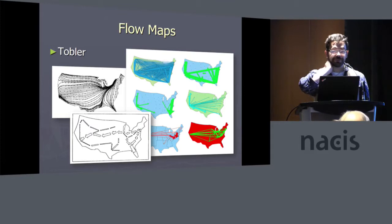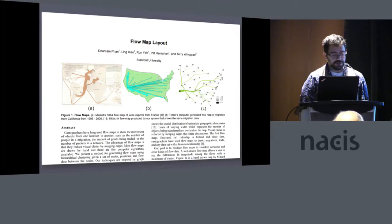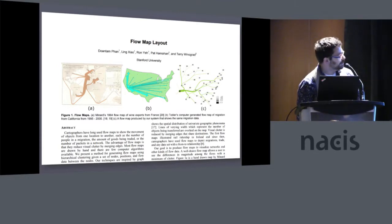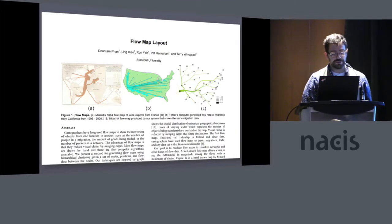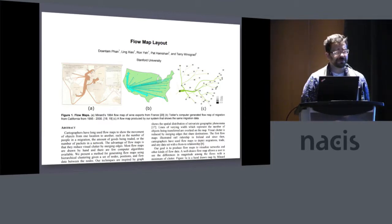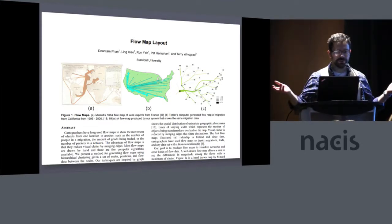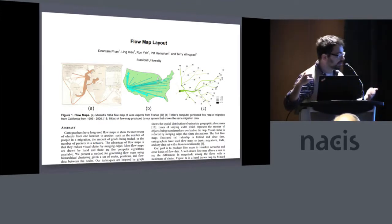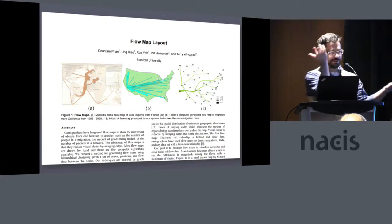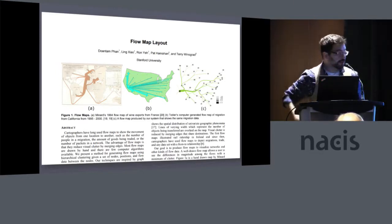Tobler was working on flow maps for several decades with some interesting results. About ten years ago I came across a computer vision paper that put together free and open source software to generate flow maps using a lot of what's called edge bundling — taking a bunch of lines and tying them together at certain places, then letting them branch off elsewhere. That works as long as you have a sort of hierarchical flow.